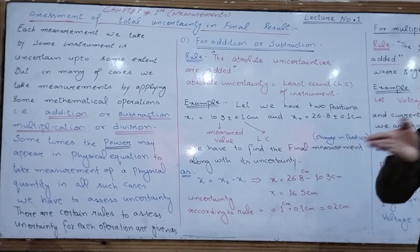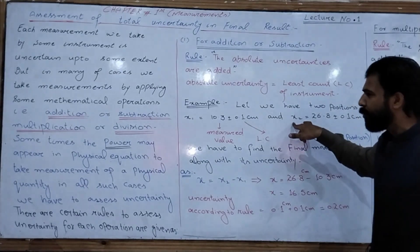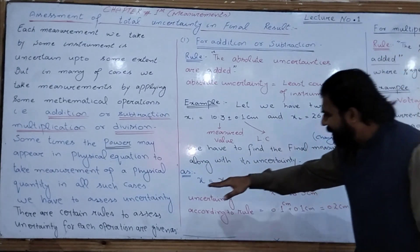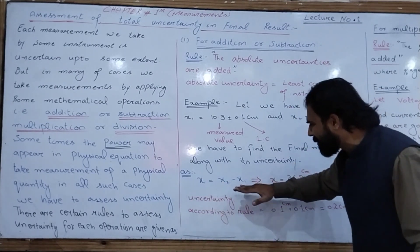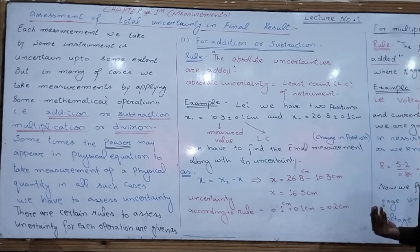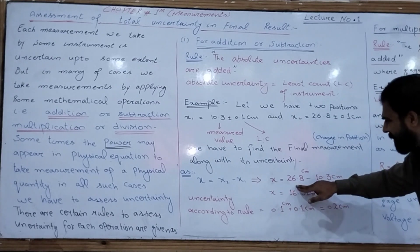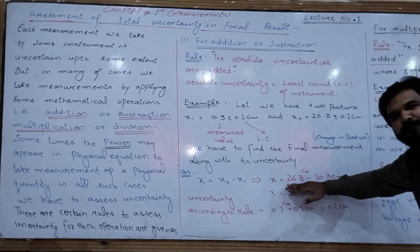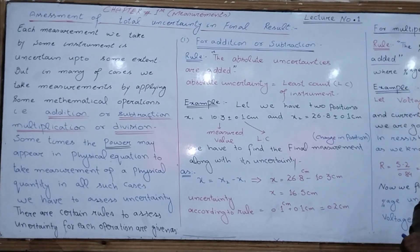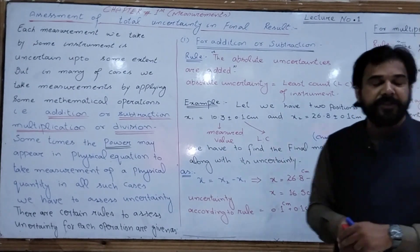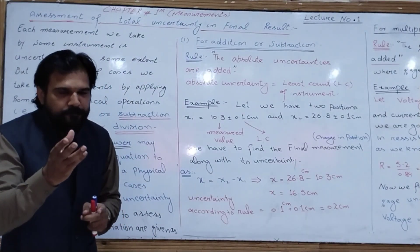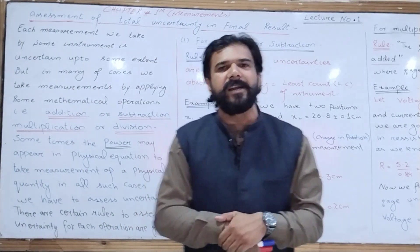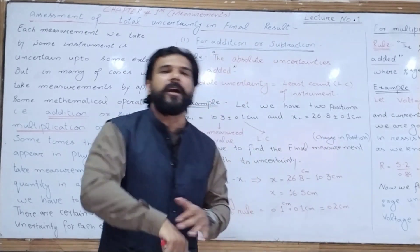The change in position is represented by x, where x = x2 − x1 (final position minus initial position). So x = 26.8 cm − 10.3 cm = 16.5 cm. This 16.5 cm is the change in position, or the distance between the two positions. However, the final result is also uncertain to some level.